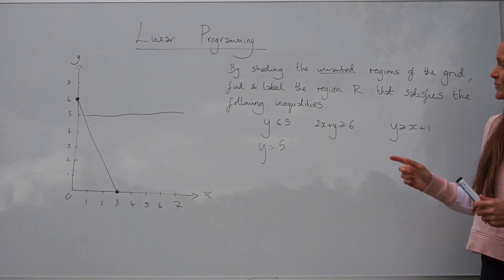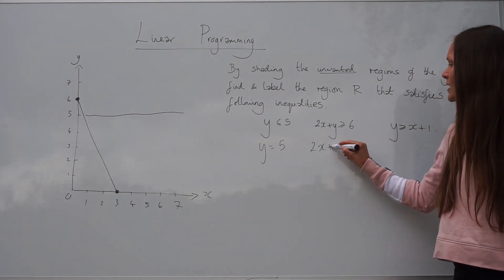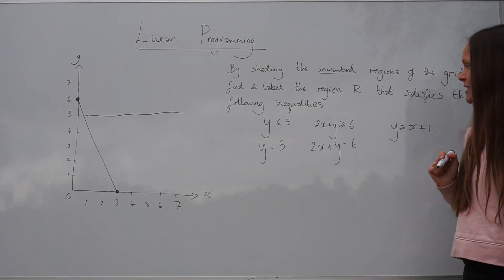For the next one, if this becomes an equation, it becomes 2x plus y equals 6.